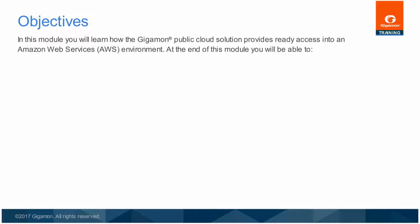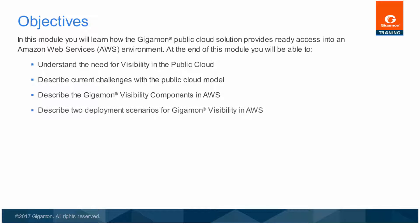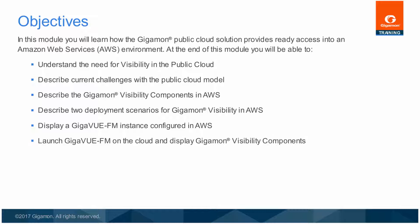At the end of this module, you will be able to understand the need for visibility in the public cloud, describe current challenges with the public cloud model, describe the Gigamon visibility components in AWS, describe two deployment scenarios for Gigamon visibility in AWS, display a Gigaview FM instance configured in AWS, and launch Gigaview FM on the cloud and display Gigamon visibility components.